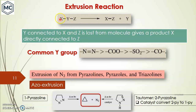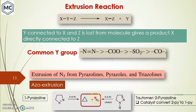Next is the extrusion reaction. An extrusion reaction means that in a molecule of the type X–Y–Z, if Y is eliminated and X and Z form a new bond, it is called an extrusion reaction. Common Y groups are N₂, CO₂, CO, and SO₂. Let's first see extrusion of nitrogen from pyrazole and triazole. In one example, 1-pyrazoline on heating or in the presence of light gives cyclopropane — nitrogen is extruded. 2-Pyrazoline in the presence of a catalyst first converts to 1-pyrazoline, then undergoes similar elimination.